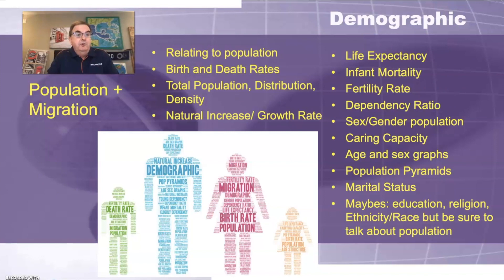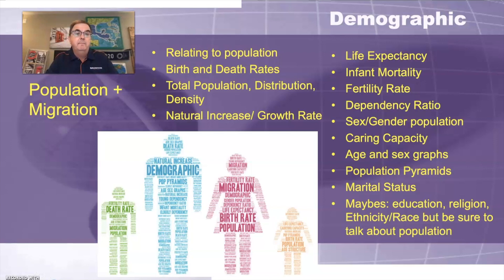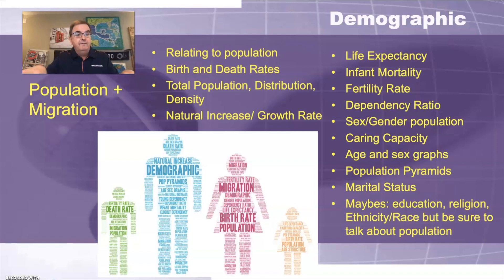Demographic is a really important word and relates to two things: population and migration. That whole unit could just be called demographics. If you're asked to discuss a demographic statistic or impact, it's all things relating to population. Better answers relate to birth rate and death rate — the demographic transition model might as well be called the population change model. You can talk about distribution — where do people live in an area — and density — how many people per square mile. Growth rate includes migration, while natural increase is just birth rates and death rates, so make sure you understand that distinction.